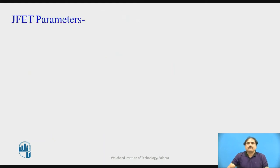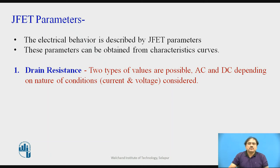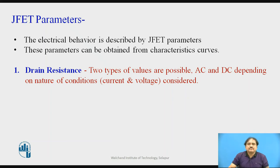Now we focus on the JFET parameters, which describe the electrical behavior of the JFET. The first important parameter is drain resistance. When the circuit carries both DC and AC voltage, the FET offers both DC and AC resistance. For DC conditions, drain resistance RDS is simply the ratio of VDS to the drain current ID. For AC conditions, RDS is taken as the ratio of delta VDS to delta ID.